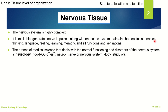The branch of medical science which deals with the normal functioning as well as disorders of the nervous system is termed as neurology — neuro meaning nerve or nervous system and logy meaning the study of. Principally, there are two types of cells which comprise the nervous tissue.